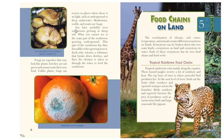You've probably seen mushrooms growing in damp soil. What you cannot see is the main part of the mushroom growing underground. This part has thin, thread-like tubes growing from it. Each tube releases a substance that breaks down detritus, and then the detritus is taken in through the tubes to feed the mushroom.